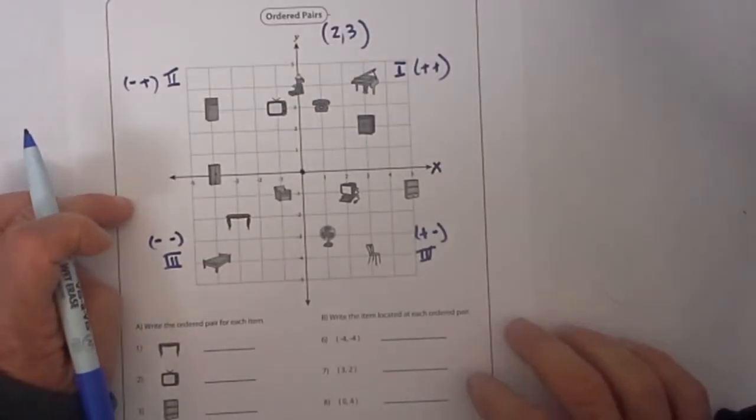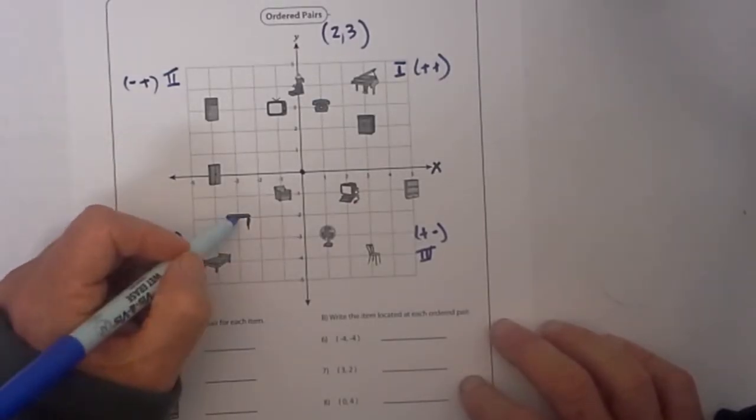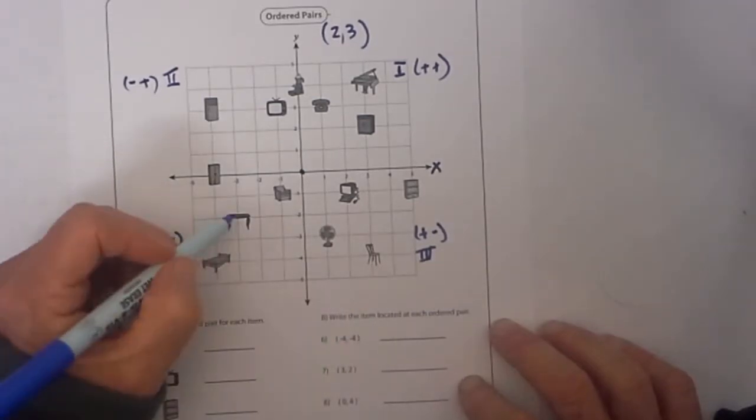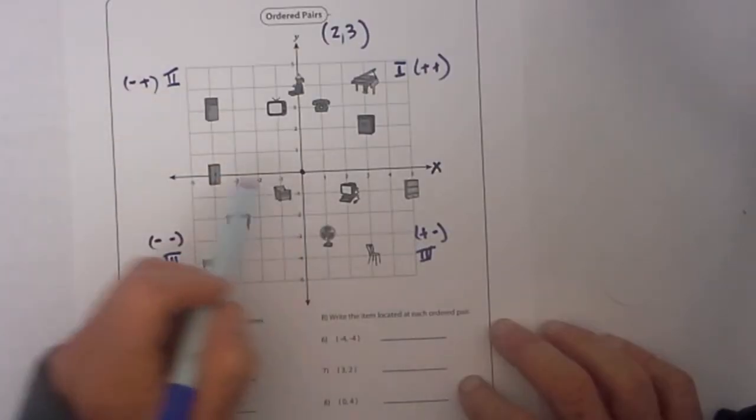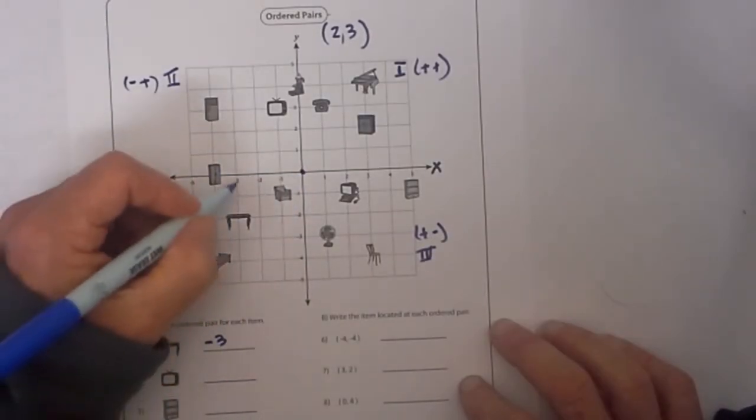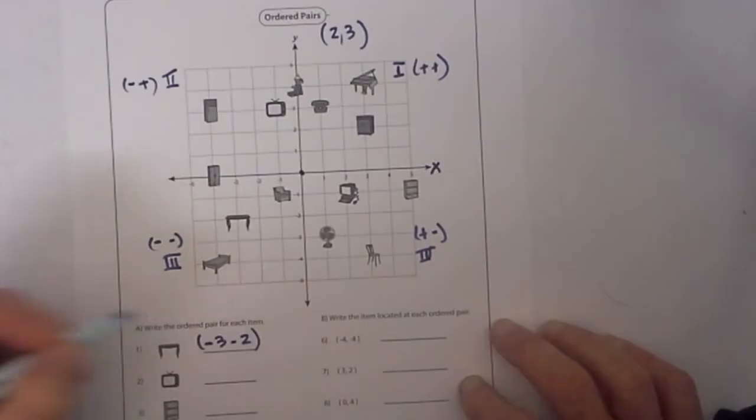So let's go ahead and work a couple examples. We first will look at the coordinate and find the ordered pairs. Let's first look at this table. We need to find the x first. We will go to the left 3 so it will be negative 3 and then we will go down negative 2. So the ordered pair is negative 3, negative 2.